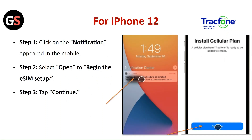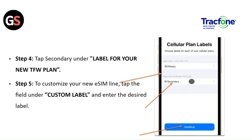For iPhone 12. Step 1: click on the notification that appears on the phone. Step 2: select Open to begin the eSIM setup. Step 3: tap on Continue. Step 4: tap on Secondary under the label for your new TFW plan.